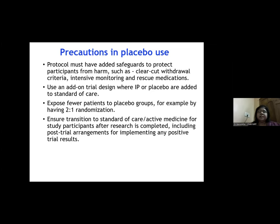An add-on trial design can be used where the investigational product or placebo is added to standard of care. For example, in a study examining vitamin C for early sputum culture conversion in TB patients, one arm receives anti-TB treatment plus vitamin C, and the control arm receives anti-TB treatment plus placebo — both receiving standard of care. Fewer patients can be randomized to the placebo group using a 2:1 randomization ratio. Post-trial, participants in the placebo arm should be transitioned to the effective treatment.